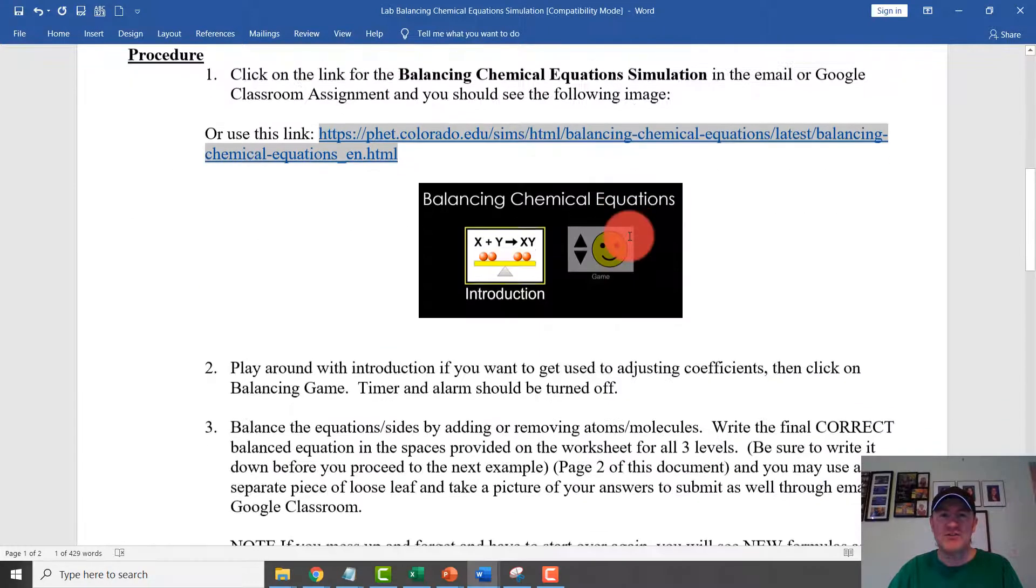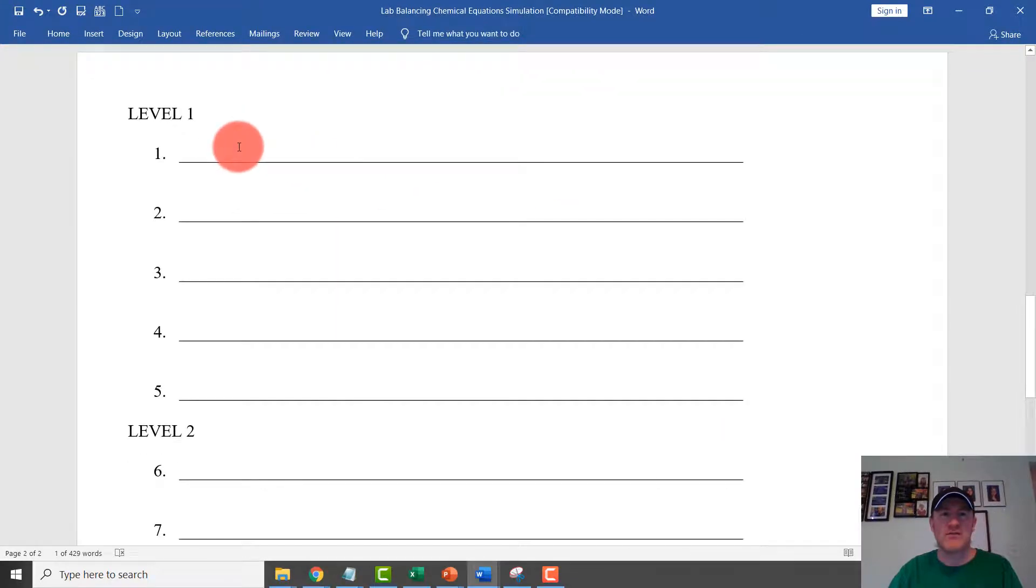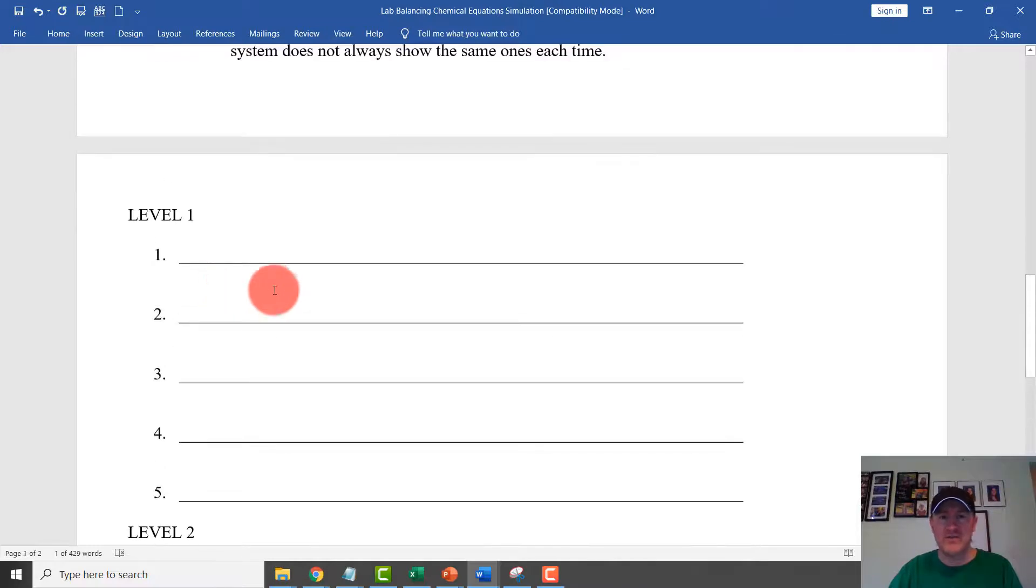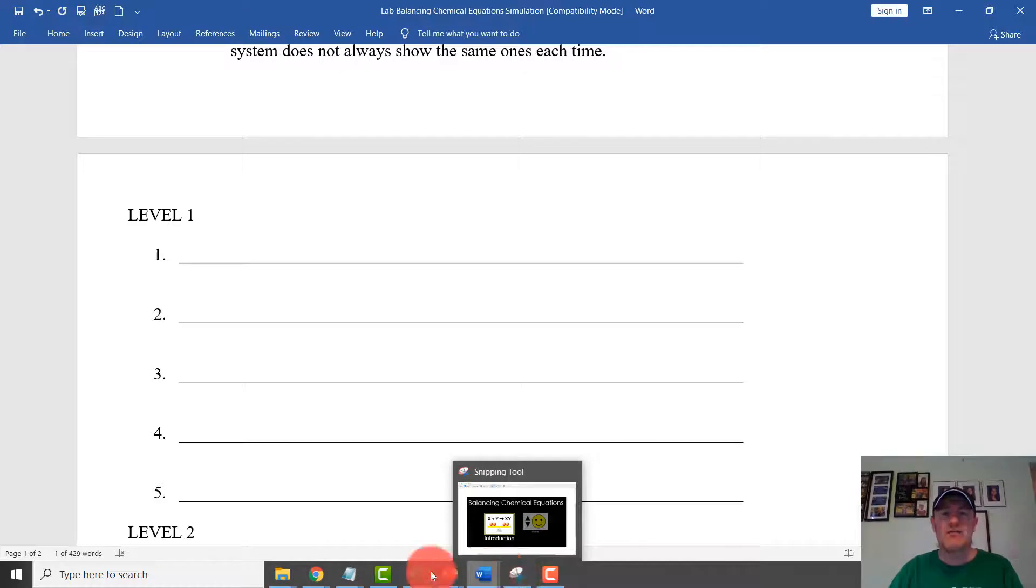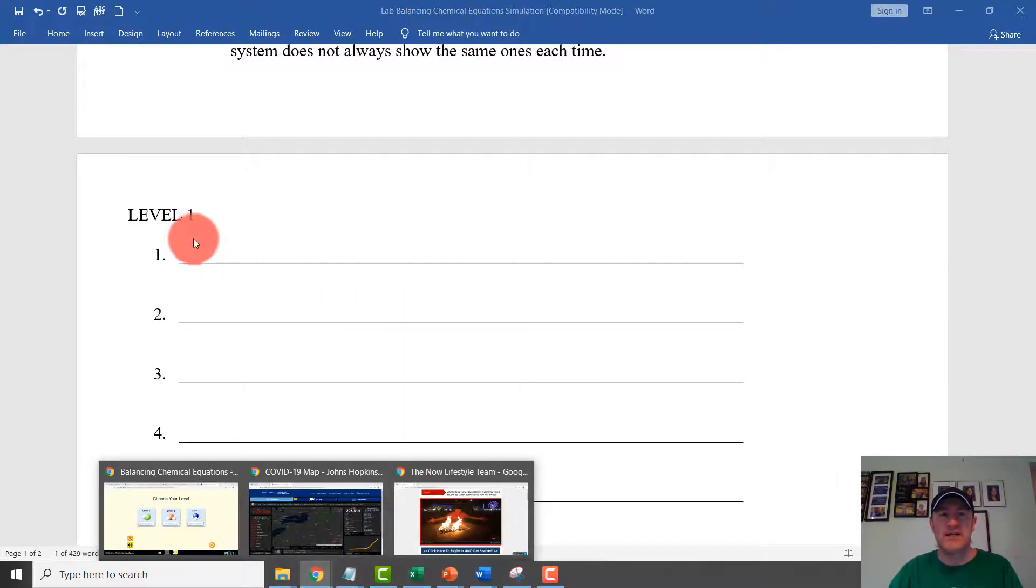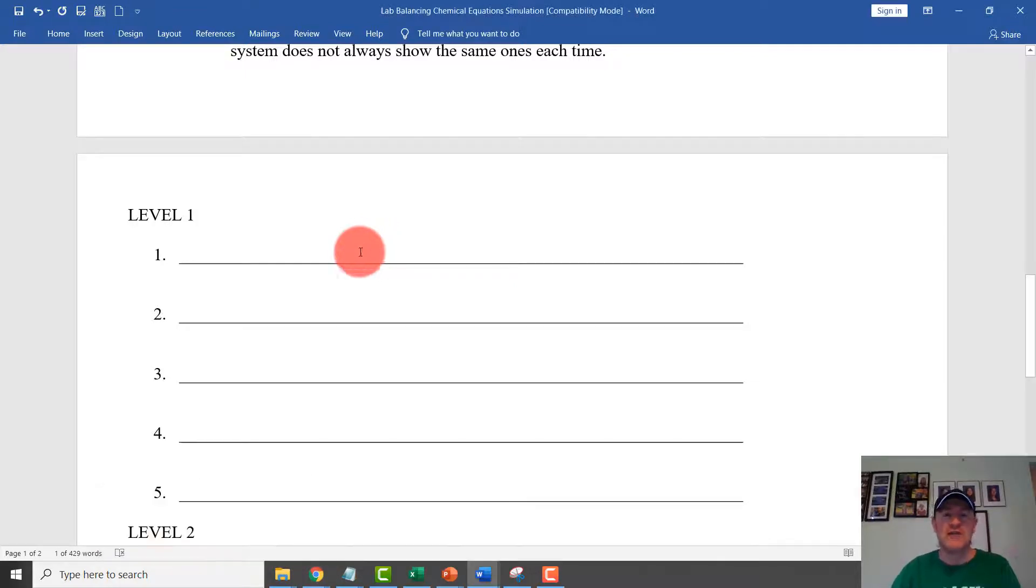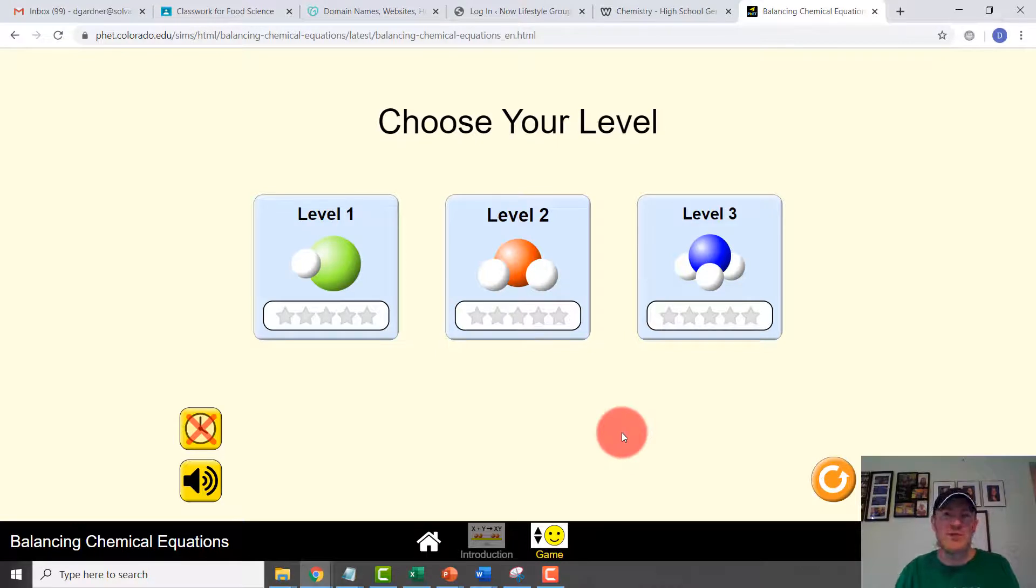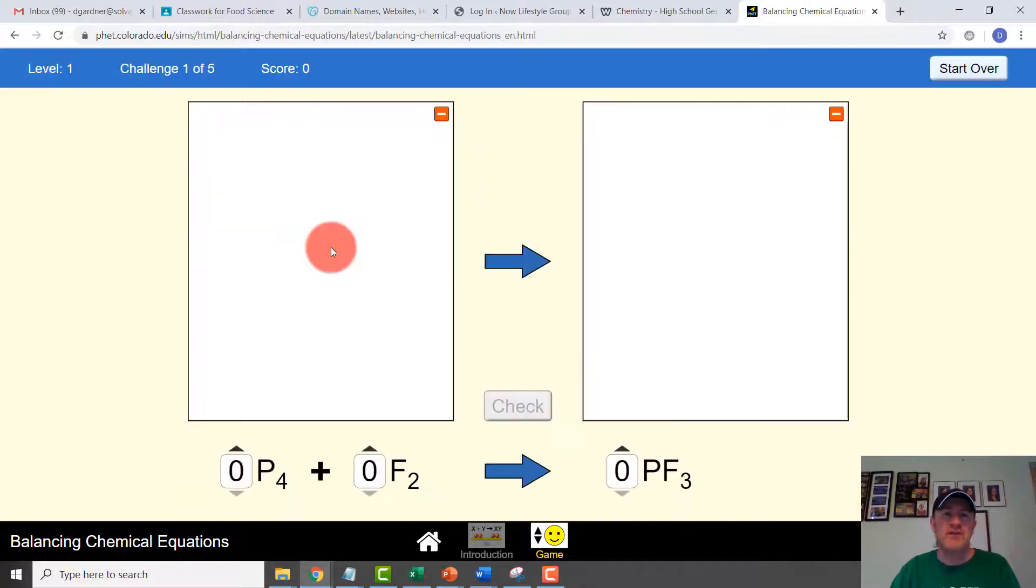At the very end, in the second page of this document, there are three sections, level one, level two, and level three. We have 15 questions. And what you need to do is complete those and then submit your answers. Either you can type them up and you can submit it through this Google Doc that I've shared with you. Or you can actually take it on a separate sheet of paper if you want to do it on loose leaf or if you want to print it out. And then you can take a picture and you can email it to me. So it's going to be a little bit different.